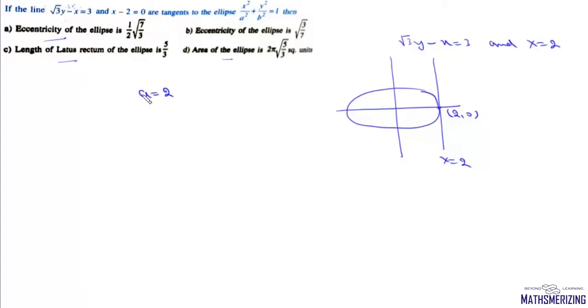Now for this other tangent, we can write this equation as y = (1/√3)x + √3. In this case, the value of m is 1/√3 and the value of c is √3.